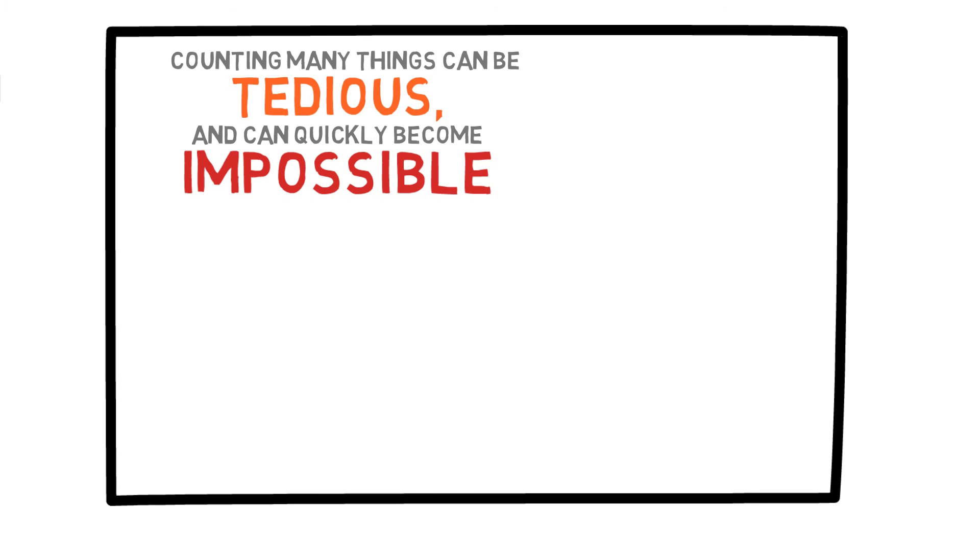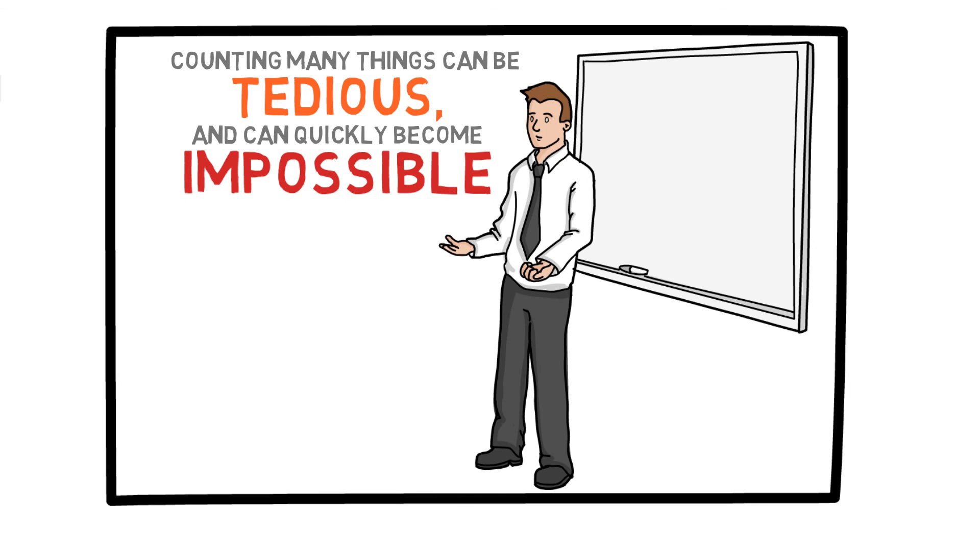If you think about it, when we are finding the probability of event A, we need to count the number of outcomes in A and divide it by the total number of possible outcomes. So basically, this is just a counting problem. And there are clever ways of counting things without really actually counting them one by one.